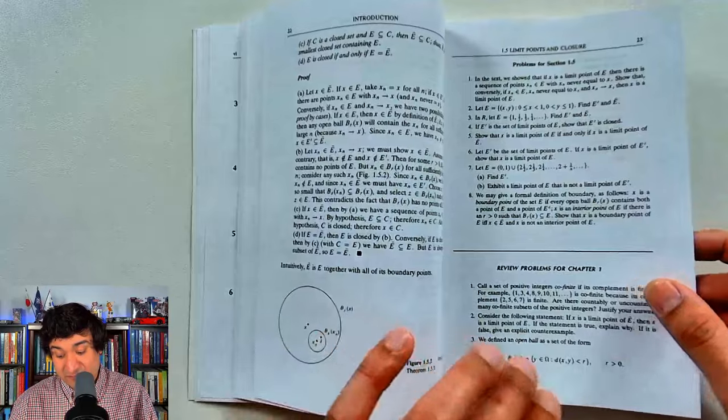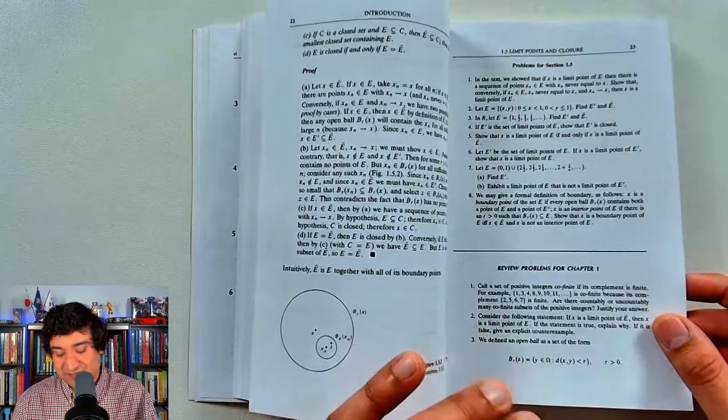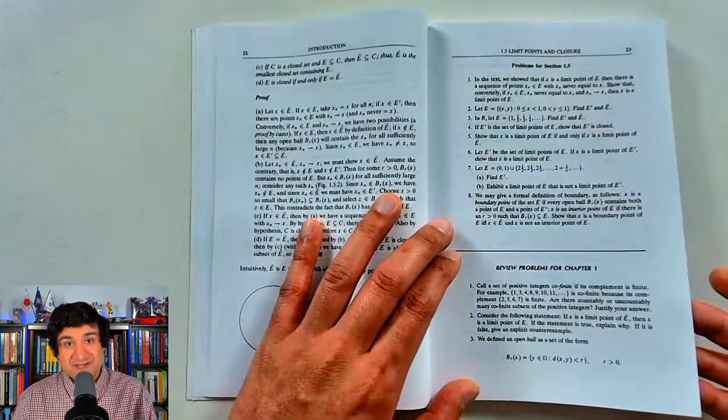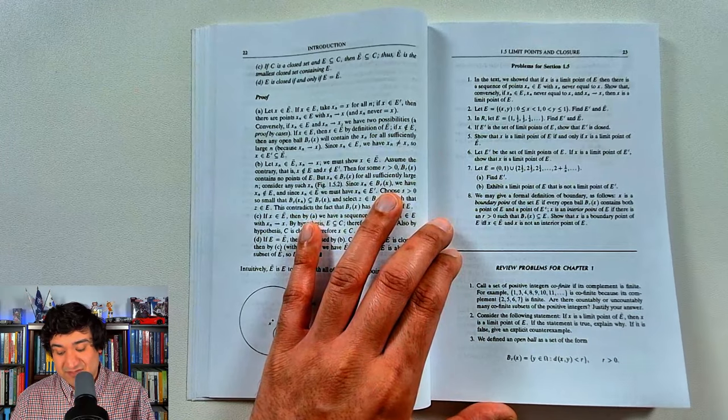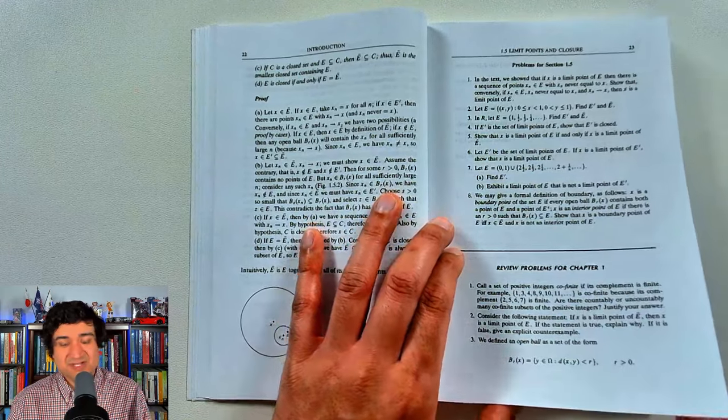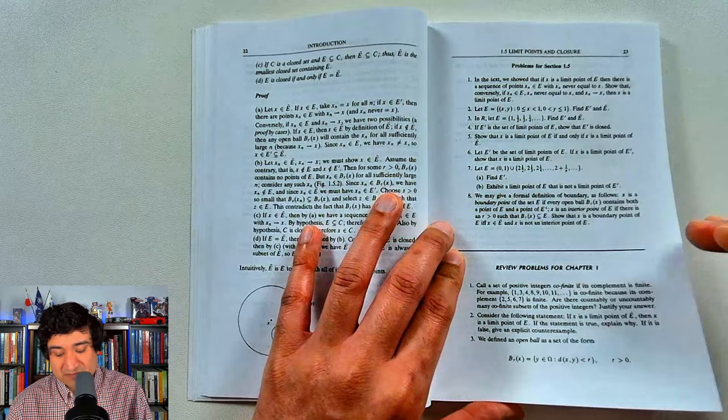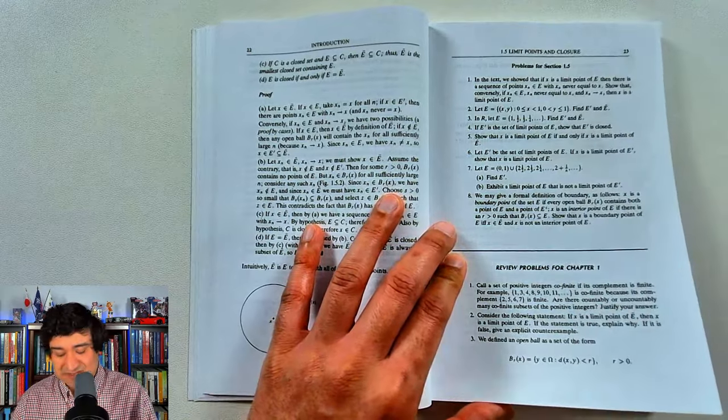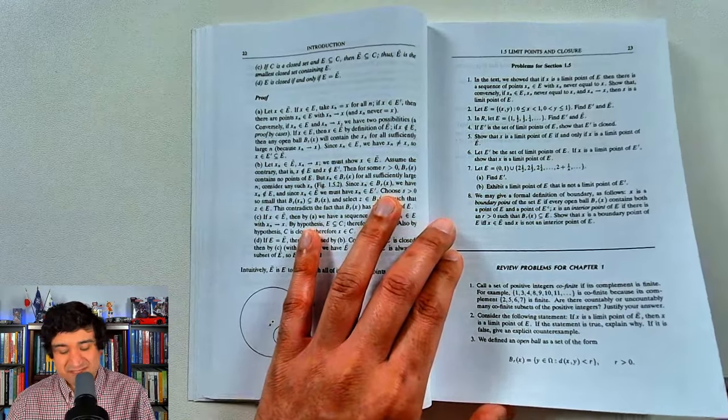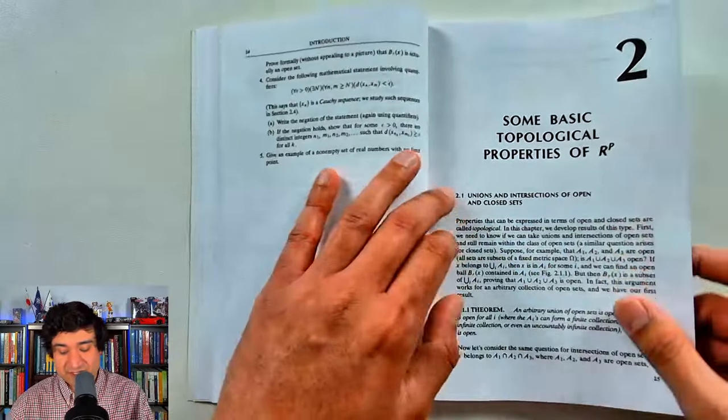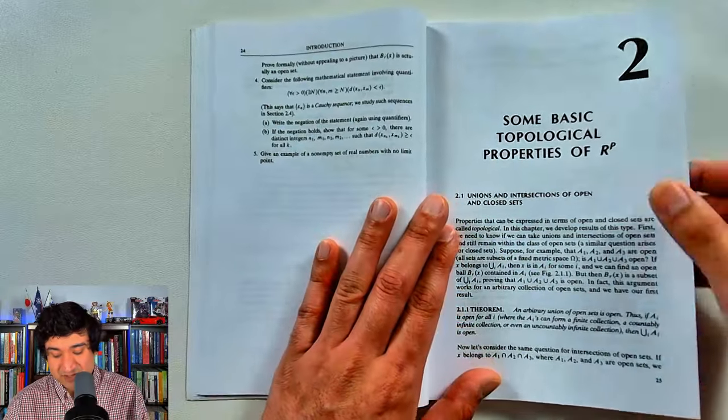So we've got these chapter review problems at the end of each chapter and fortunately for us we have solutions to even these. A lot of books will give you one problem set where we get full solutions and then the second problem set no solutions. Not the case here. We've got full solutions for both. And then some basic topological properties of RP.